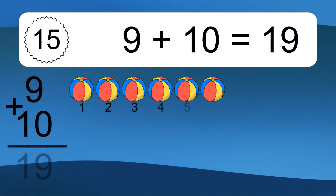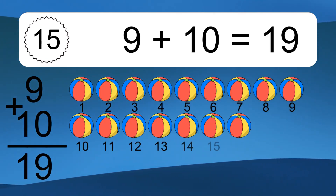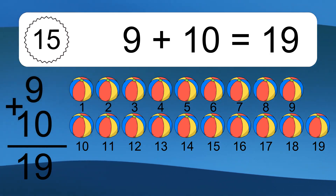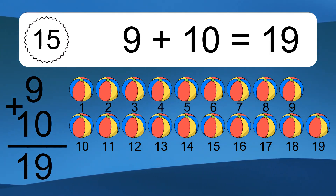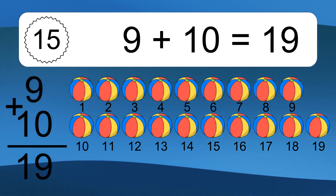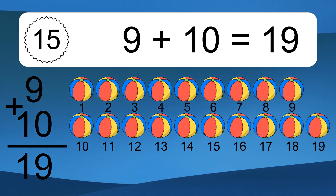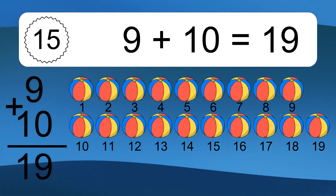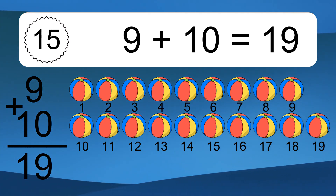9 plus 10 equals 19. Let's count it: 1, 2, 3, 4, 5, 6, 7, 8, 9, 10, 11, 12, 13, 14, 15, 16, 17, 18, 19.